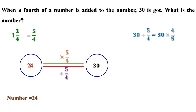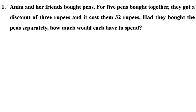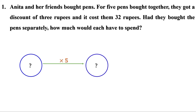Now let us do the problems on page 37. First problem: Anita and her friends bought pens. For 5 pens bought together they got a discount of 3 rupees and it cost them 32 rupees. Had they bought the pens separately, how much would each have to spend? We need to find the actual cost of a pen. They bought 5 pens, so the price of a pen is multiplied by 5. Then a discount of 3 rupees is subtracted, giving an amount of 32 rupees.